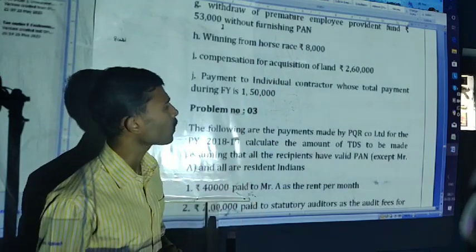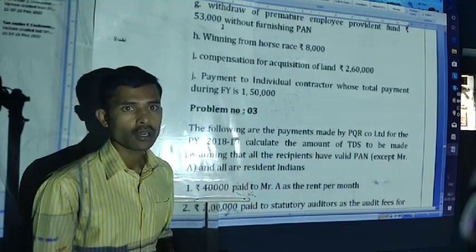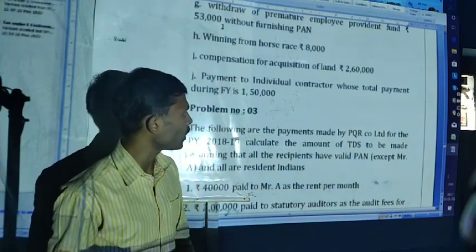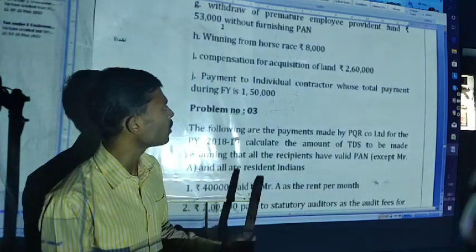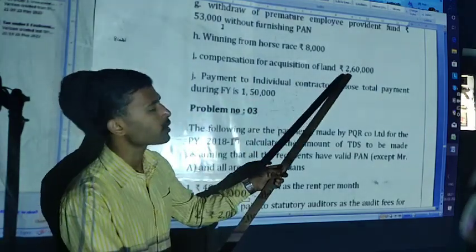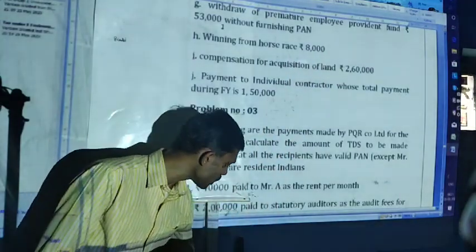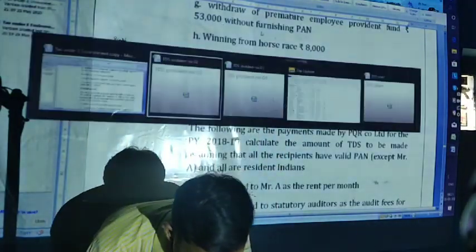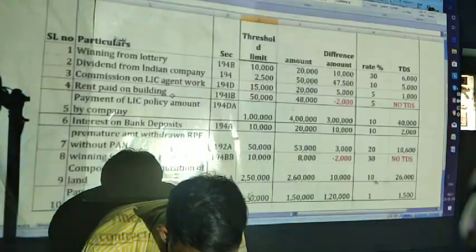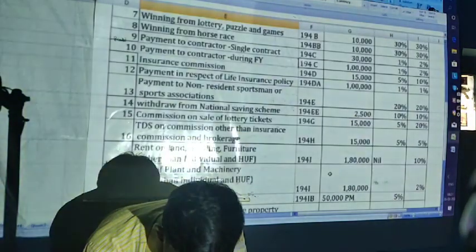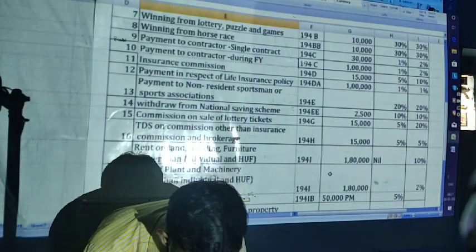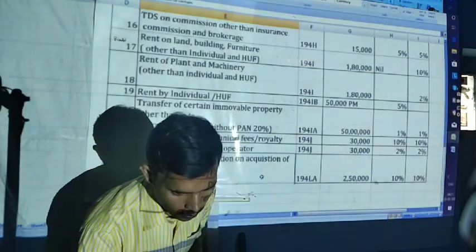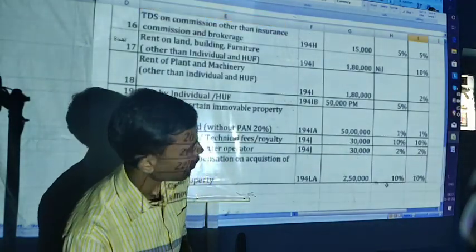Compensation for acquisition of land under section 194LA. Up to 2,50,000 — no TDS. Here the amount is 2,60,000, then it will attract TDS at the rate of 10%.